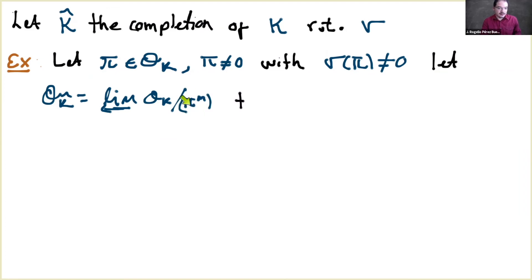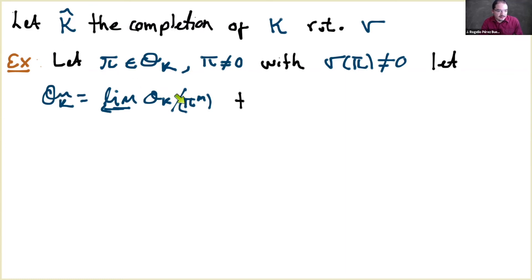Finally, the definition of a local field: a local field is a complete discrete valuation field. 'Discrete' means the image of the valuation — the valuation group — is a discrete subgroup of ℝ, hence isomorphic to ℤ. Moreover, a local field has a perfect residue field of characteristic p > 0.